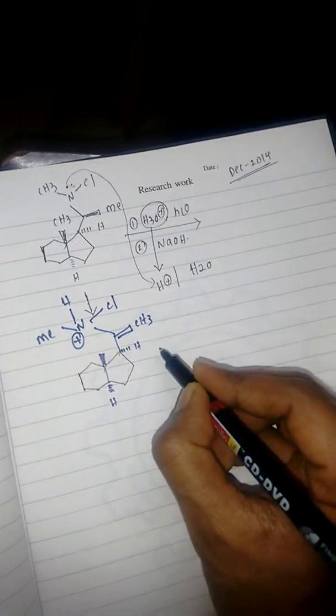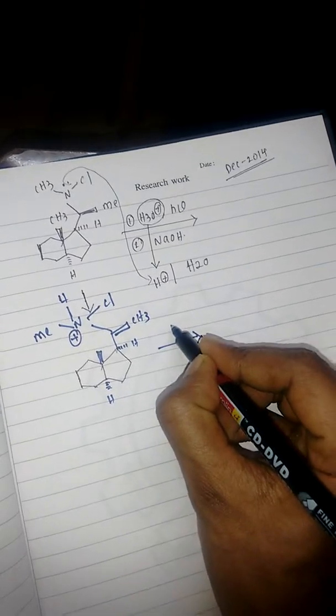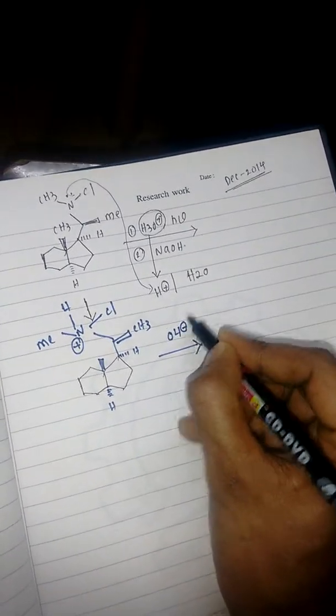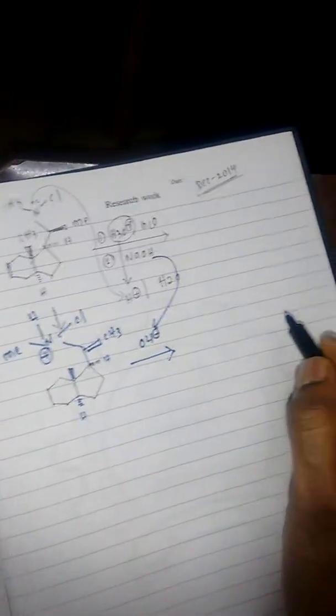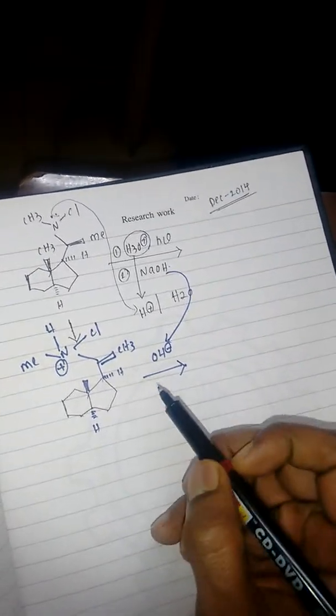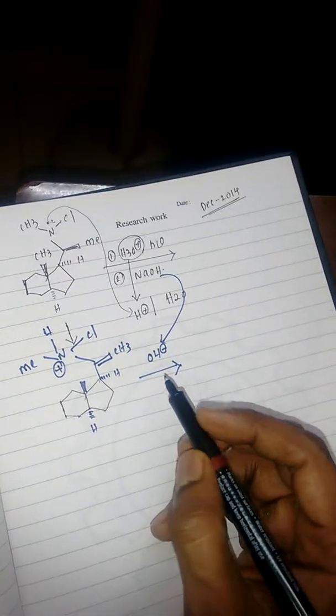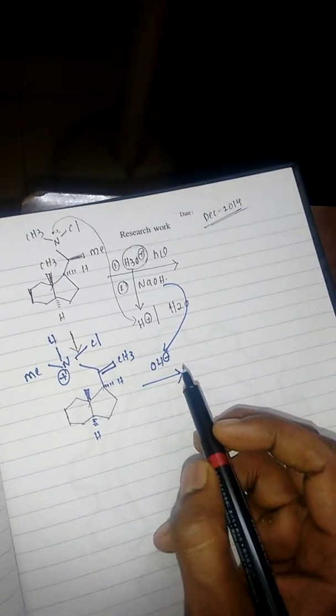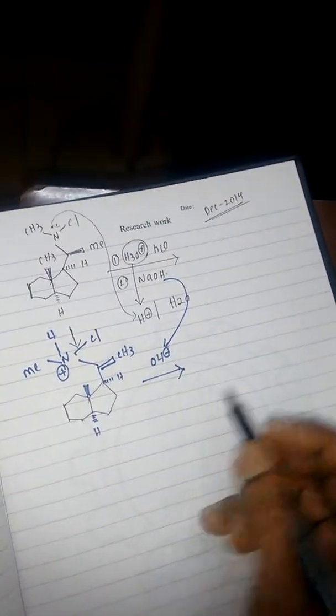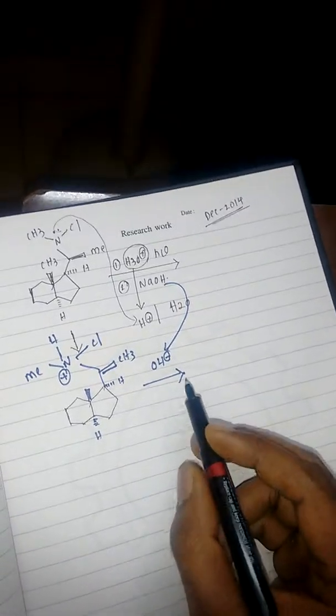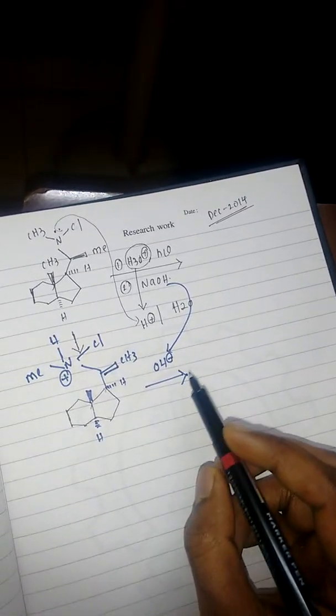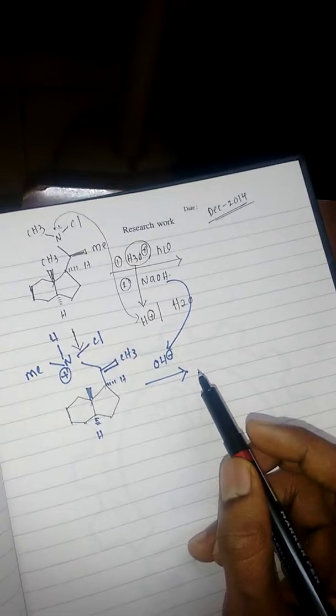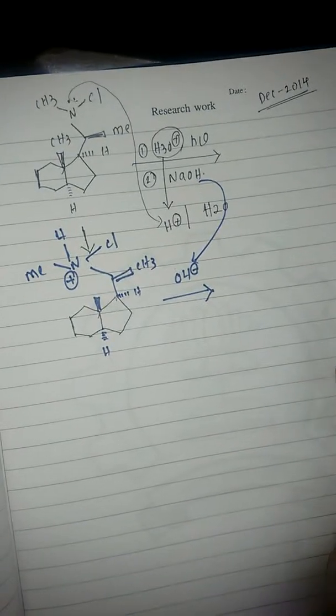Next, in the next step we have OH- which comes from the sodium hydroxide, so that will abstract the proton from the CH2 group. If you see the options in December 2014, there you will find the options.